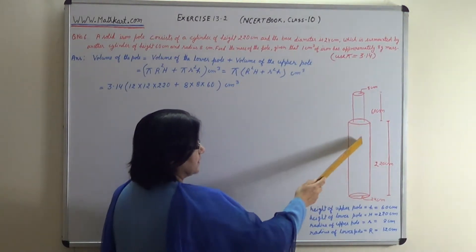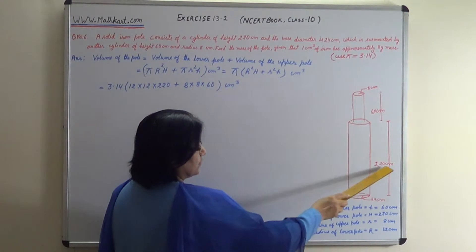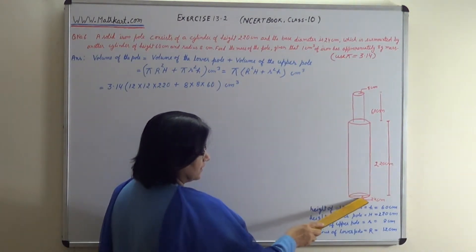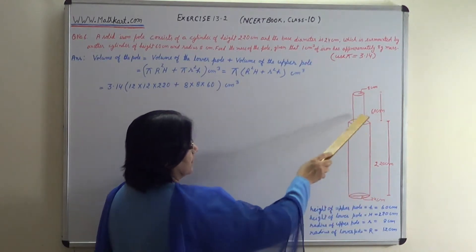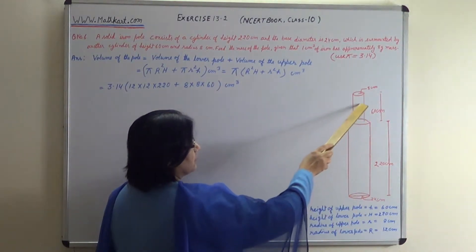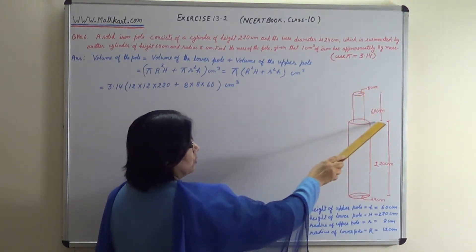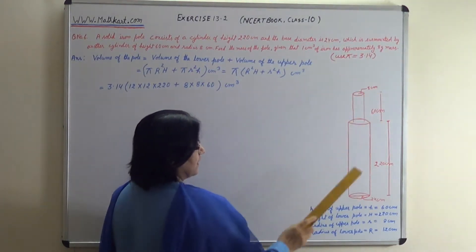The lower cylindrical pole has 220 cm height and diameter 24 cm. The upper cylindrical portion has 8 cm radius and 60 cm height.